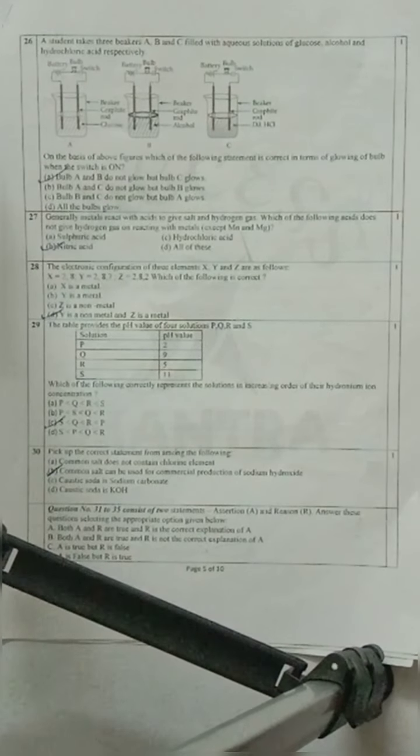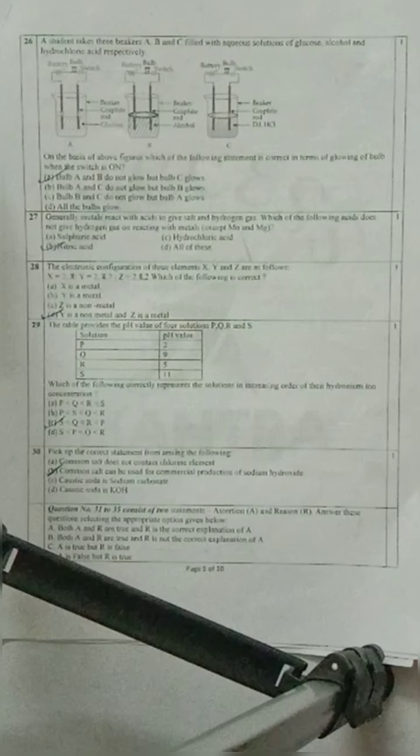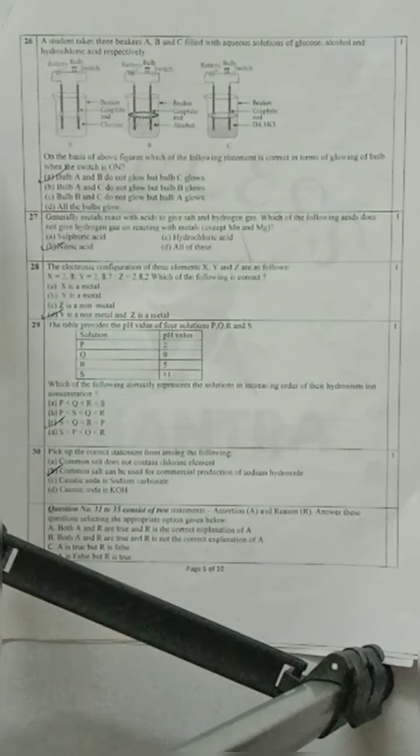Question 29: The table gives the pH value of four solutions P, Q, R, S. Which of the following correctly represents the solution in increasing order of their hydronium ions concentration? You need to determine based on pH values. Option C is your correct option.